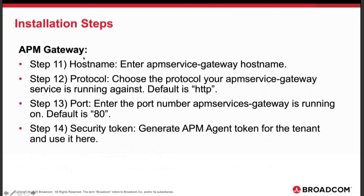The following section covers APM service gateway details: host name, protocol (default HTTP, or HTTPS for SaaS), port (default 80, or 443 for HTTPS), and security token. The security token is an APM agent token generated from the APM page for the specific tenant against which you want to integrate CAPC.